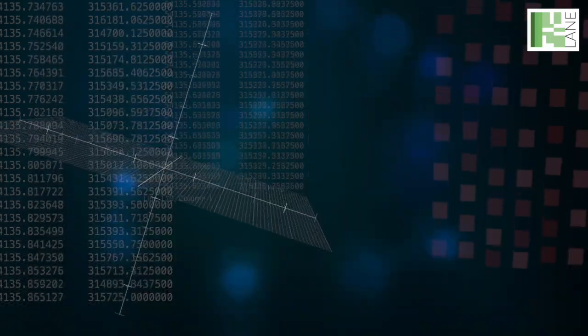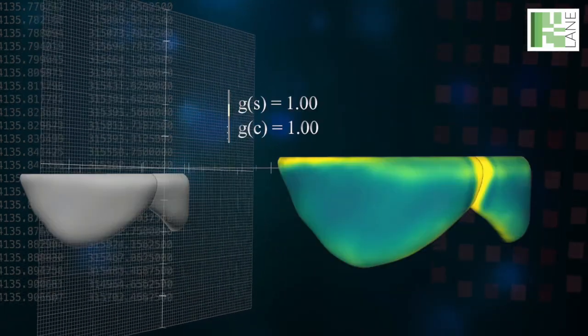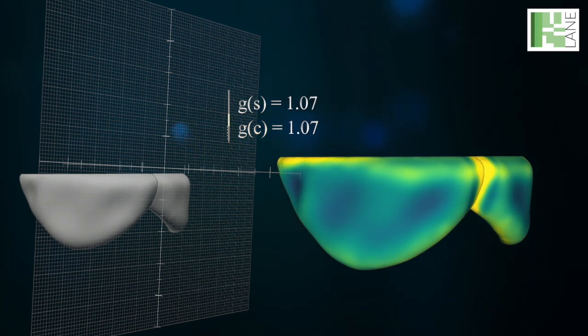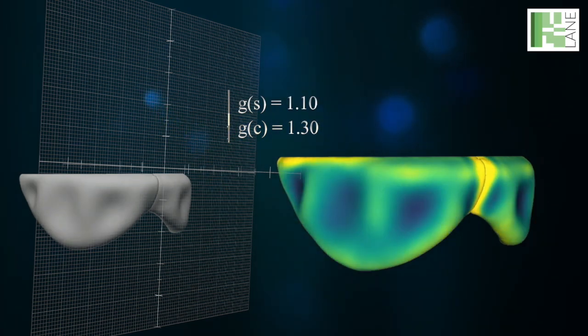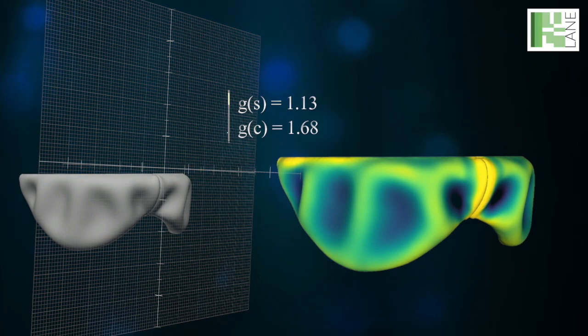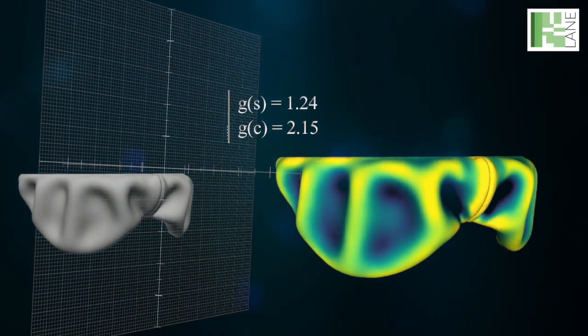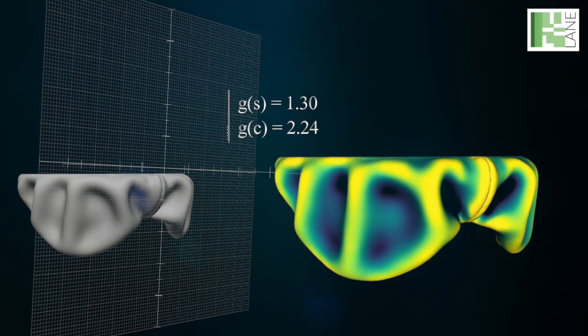The team then simulated growth in a computer model and found it could recapitulate how folds develop in the frills of real embryos. These results provide evidence that physical processes, as well as genetic programs, can shape the structure of tissues and organs during an embryo's development.